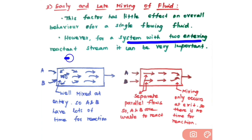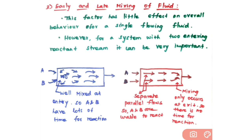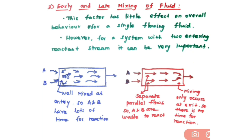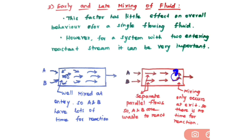If you have a system with two entering reactant streams, then early or late or uniform mixing is very important and plays a crucial role. For early mixing, reactants A and B have lots of time for reaction. In the system with late mixing, at the entry you have separate parallel flows of reactants A and B with no mixing, so A and B are unable to react — no reaction occurs at the entry. Mixing occurs only at the exit, leaving no time for reaction. So mixing plays a crucial role in getting complete conversion.